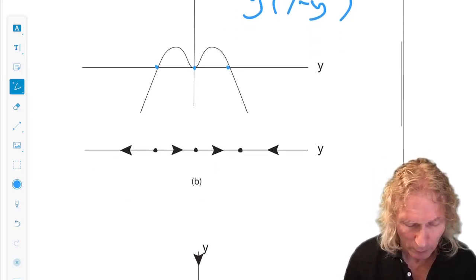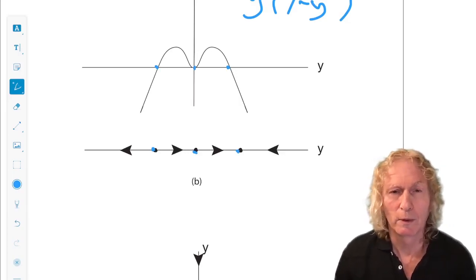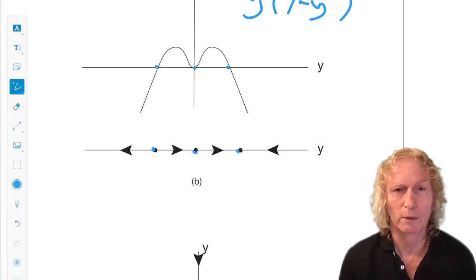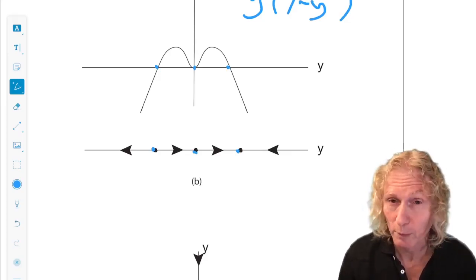And we see the three equilibrium points, and the sign of the vector field in between. So, if we plot the three equilibrium points, and the arrows indicate whether the vector field is positive or negative, increasing or decreasing, we have this picture.